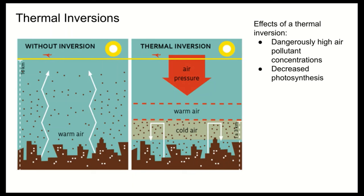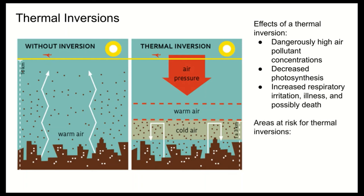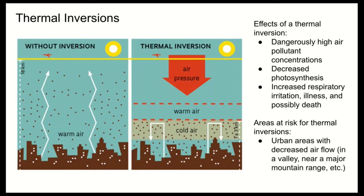Urban areas with decreased airflow — such as those in valleys or near major mountain ranges — are at greatest risk for thermal inversions. Urban surfaces that heat up during the day cool off rapidly at night, especially during a cold snap, making these areas especially prone to cold air being trapped beneath warm air.